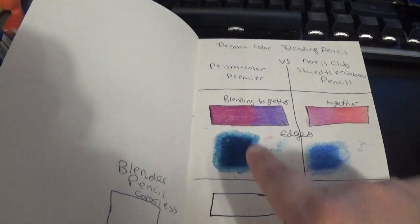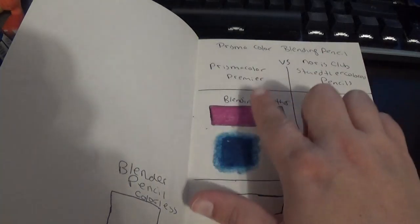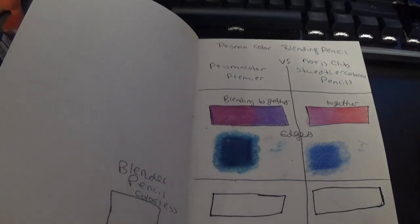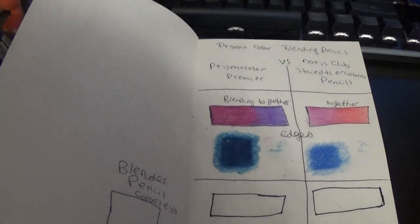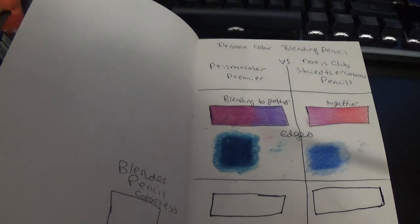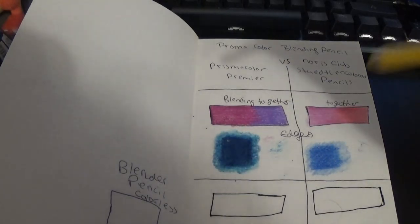Just dropped it. This is gonna be the Prismacolor side and this is the other brand. I'm gonna start off with yellow. So here we go, I'm gonna start off with canary yellow. It's PC 916.